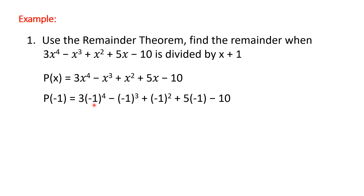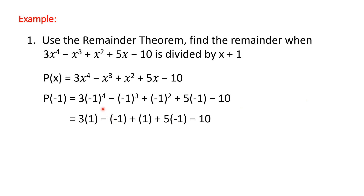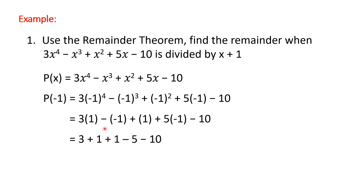So x becomes -1, x³ becomes (-1)³, and x² becomes (-1)². Now: (-1)⁴ = 1, (-1)³ = -1, and (-1)² = 1. Then we compute: 3 times 1 is 3, negative times -1 is positive 1, and 5 times -1 is -5.